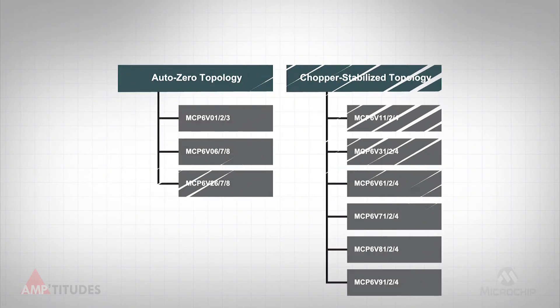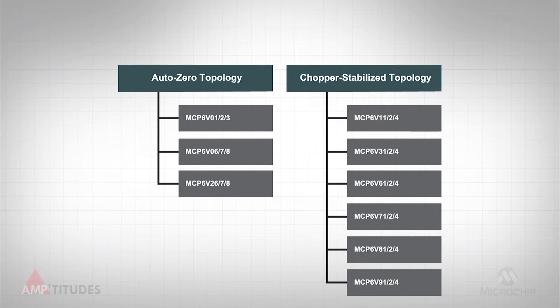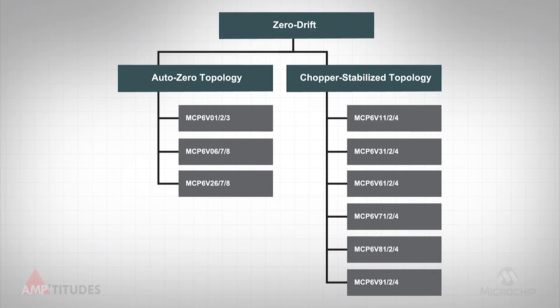For example, Microchip Technology has developed two different self-correcting architectures: an auto-zeroing topology as well as the chopper-stabilized topology. However, both of these architectures fall under the zero drift designation.